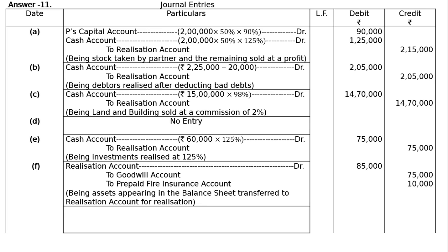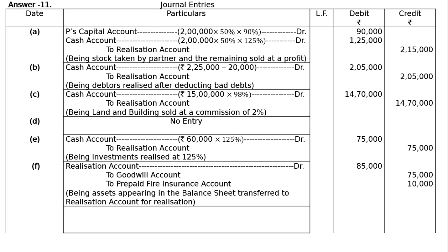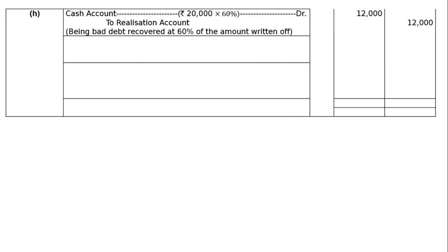Part G: there was old furniture in the firm which had been written off completely in the books. This was sold for Rs.10,000, recorded on the credit side of Realization account. Cash account debited Rs.10,000 to Realization account Rs.10,000, being fully depreciated furniture sold for Rs.10,000.